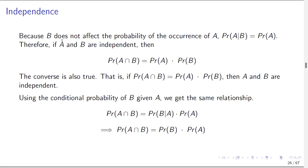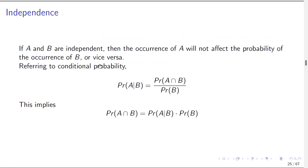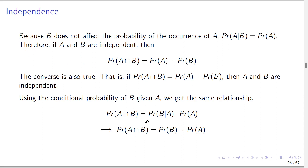Because B does not affect the probability of the occurrence of A due to independence, then P(A|B) is simply P(A), because A and B are independent — the fact that B has occurred in no way affects whether A occurs. So if you ask what's the probability of A given B, they don't have any relationship, so this is simply the probability of A. Therefore, P(A∩B) simplifies to P(A) · P(B). The converse is also true: if P(A∩B) = P(A)·P(B), then A and B are said to be independent.